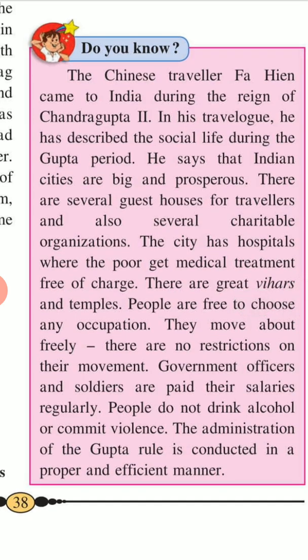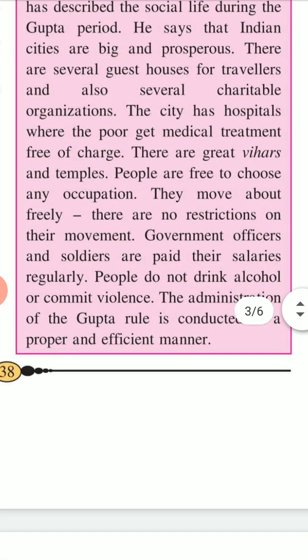The Chinese traveller Fahien came to India during the reign of Chandragupta II. In his travel account, he described social life during the Gupta period. He says Indian cities are big and prosperous, with guest houses and charitable organizations. The cities have hospitals where the poor receive medical treatment free of charge. There are great viharas and temples. People are free to choose any occupation and move about freely. Government officers and soldiers are paid their salaries regularly. People do not drink alcohol. The administration of Gupta rule is conducted in a proper and effective manner.